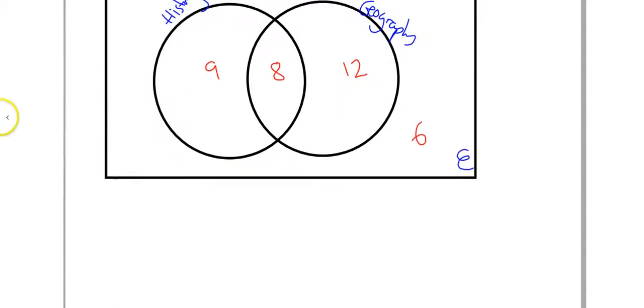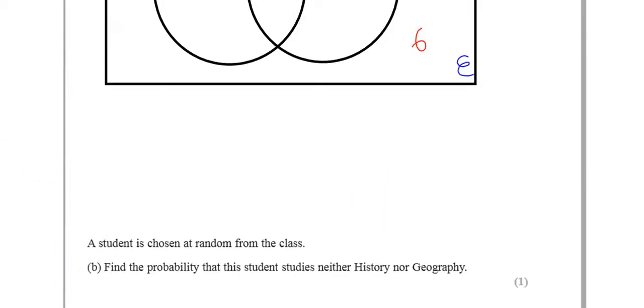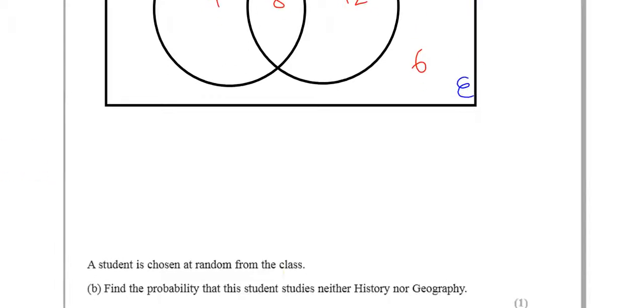If we scroll down, it says, A student is chosen at random from the class. Find the probability that this student studies neither history nor geography. So, let's go back up and look at our diagram. Neither history nor geography.